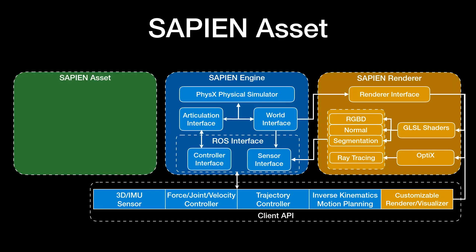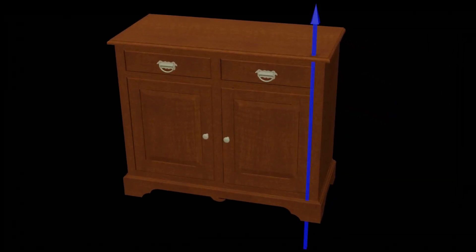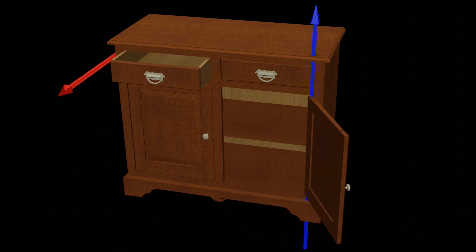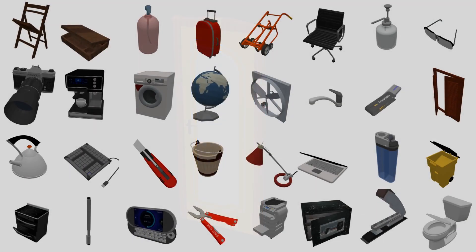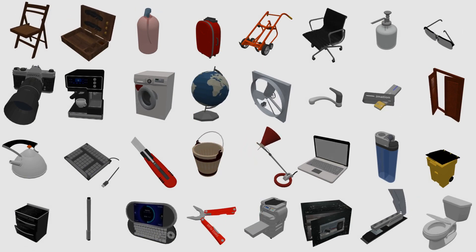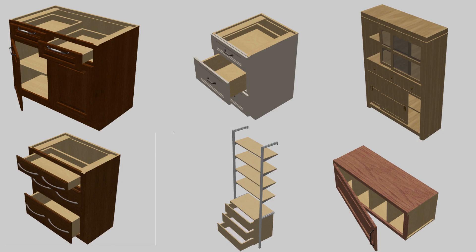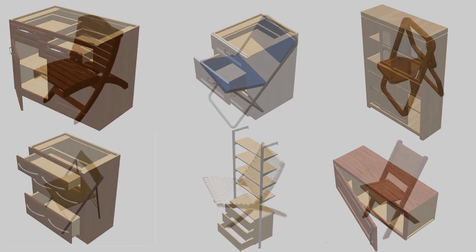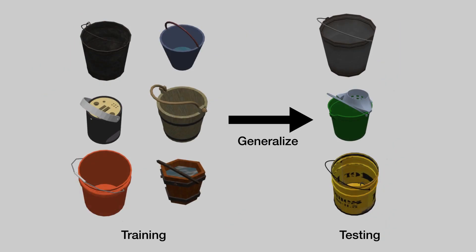Next, let's see what simulation content Sapien has to offer. We provide the PartNet Mobility dataset, which is a further annotation of the ShapeNet and PartNet datasets, to include more than 2,000 models and 14,000 movable parts. We have annotated the rotational axis and the translational axis for each movable part, and for each axis we annotate the motion range. The annotation includes complex kinematic chains, such as the relation between the door handle and the door shaft. In contrast to most existing environments, the PartNet Mobility dataset is designed with cross-instance generalization in mind — objects in each category can have different appearances and motion parameters. It encourages the development of manipulation algorithms that generalize across object instances and avoid overfitting to specific settings.